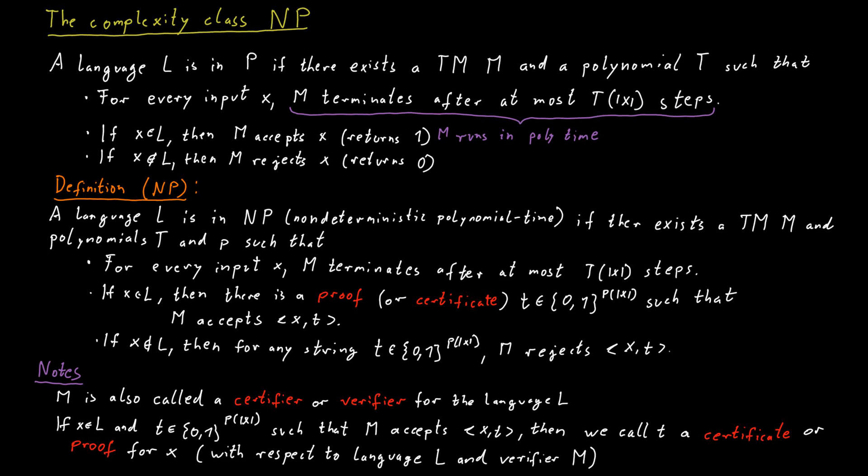You may come across different definitions for the class NP, in particular definitions that use non-deterministic Turing machines. These alternative definitions are equivalent to the one I'm giving here. So there's no difference between them. It's just that our definition here doesn't require the introduction of a new model of a Turing machine.